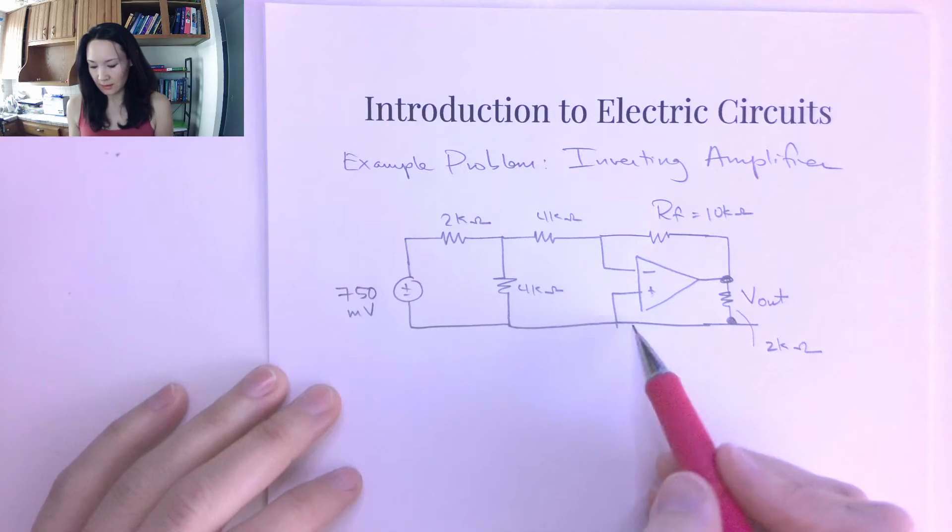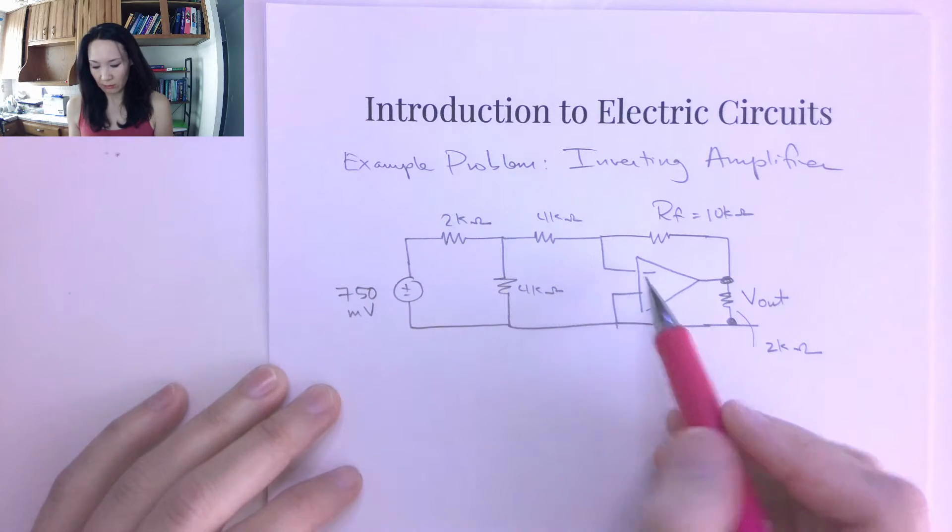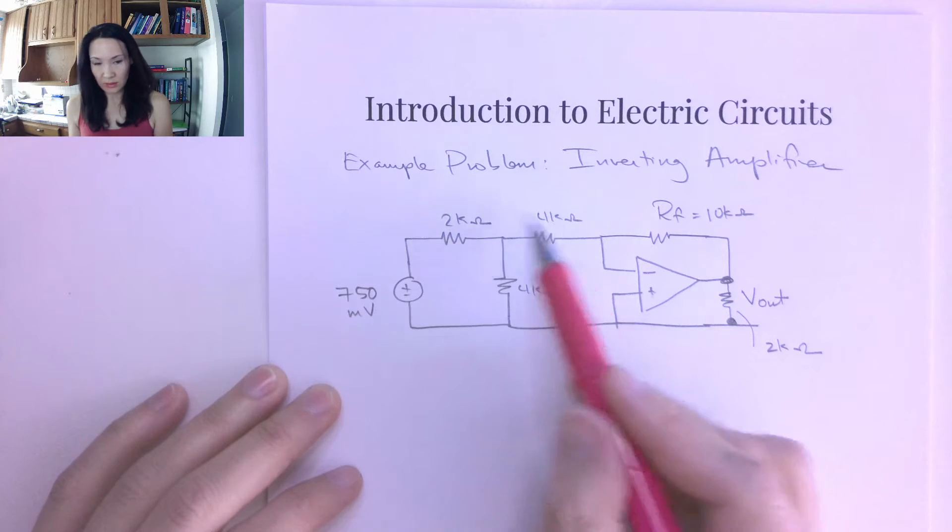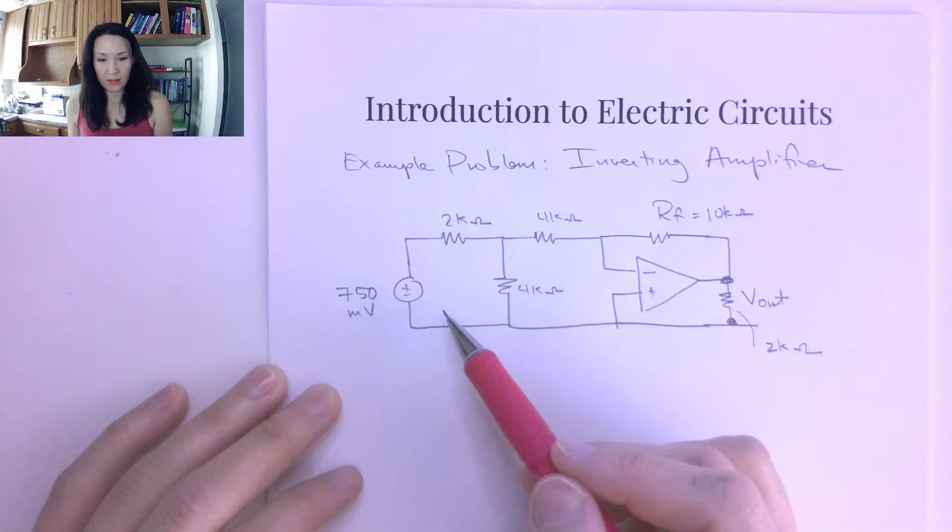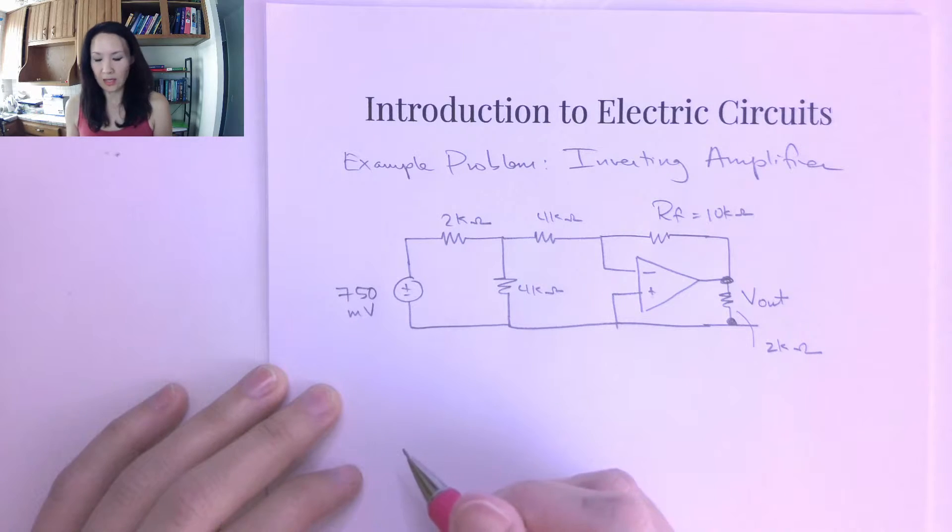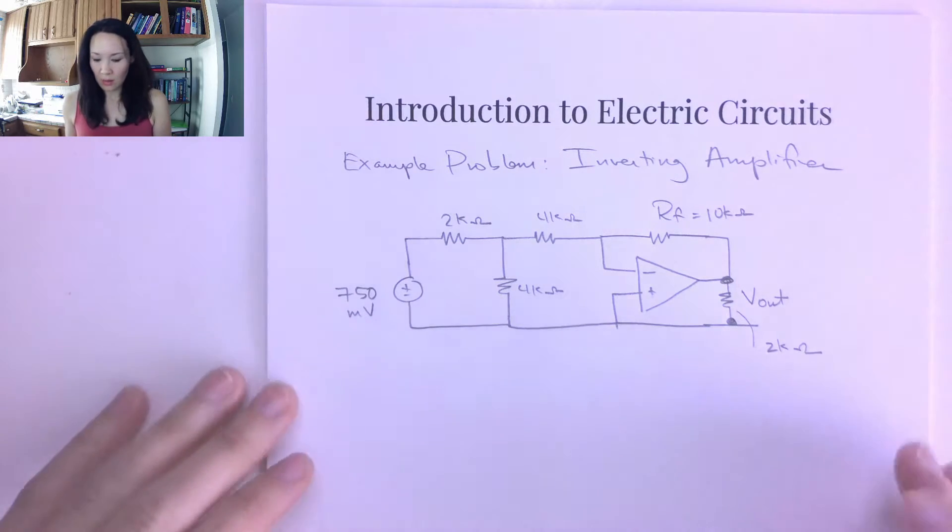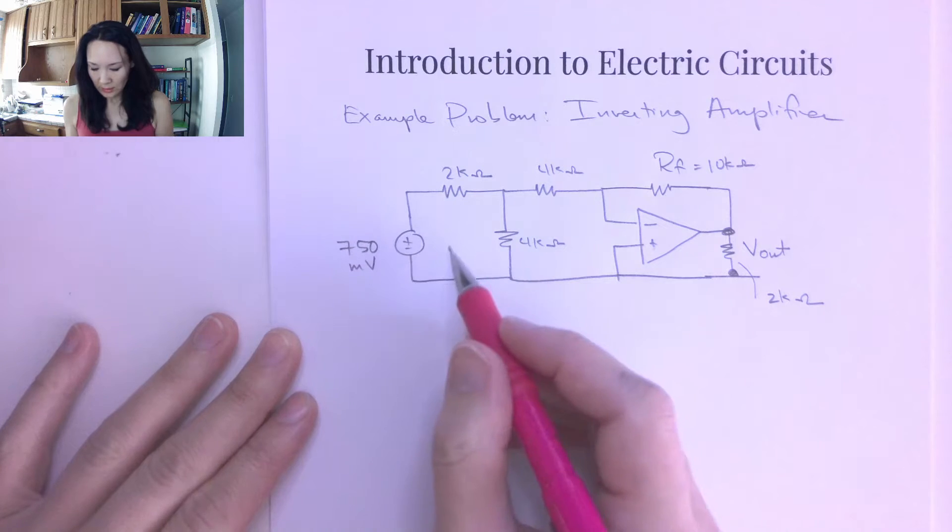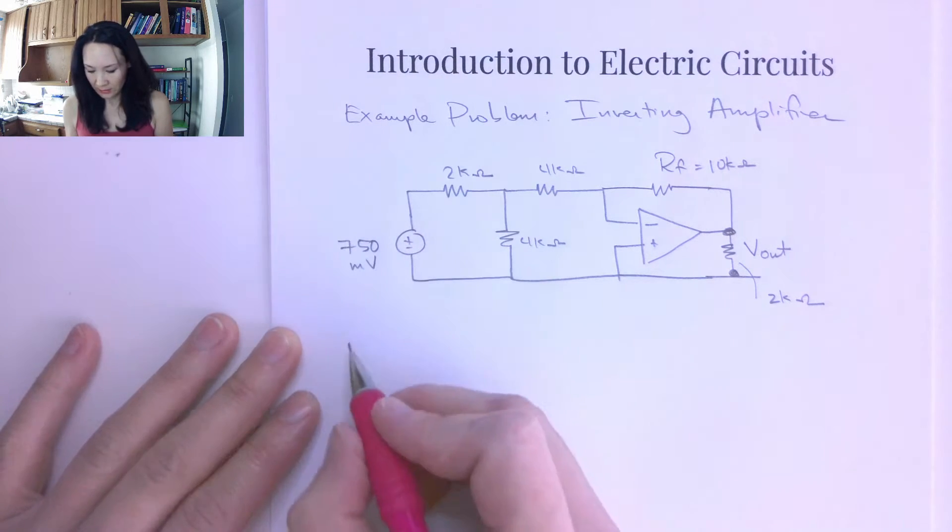Well, we know that since this is tied to ground, this is going to be an inverting amplifier. So how about we do some simplification over here so that it looks similar to the problem that we looked at in the last video.